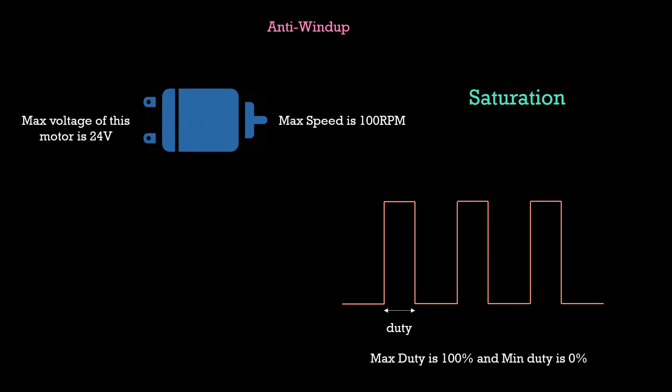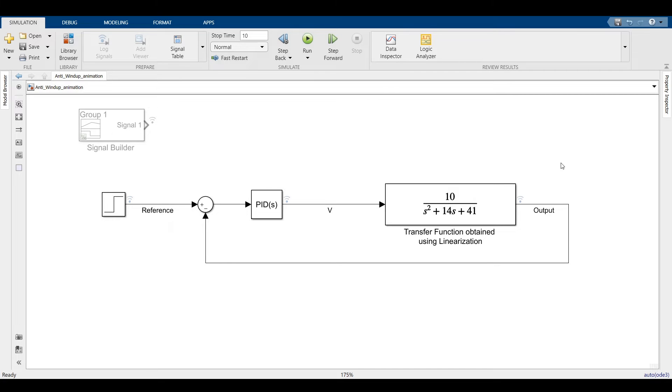But in the control system we designed, we have never accounted for this limitation till now. We assume that the system is linear and the output will keep rising as I keep increasing the commanded input. But you know that I cannot command 1000V to a motor which is meant to operate only at 24V.